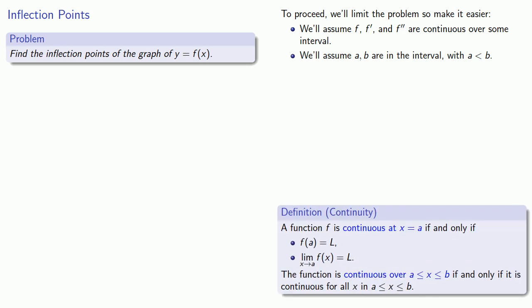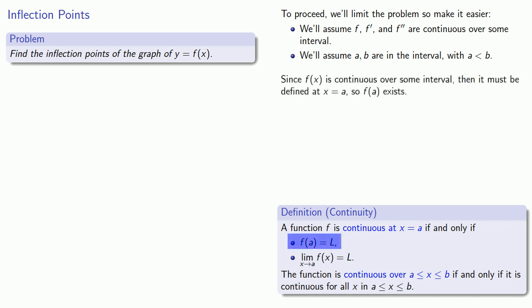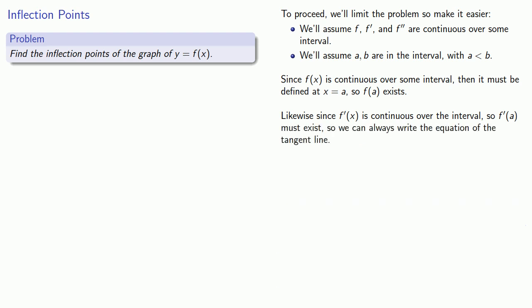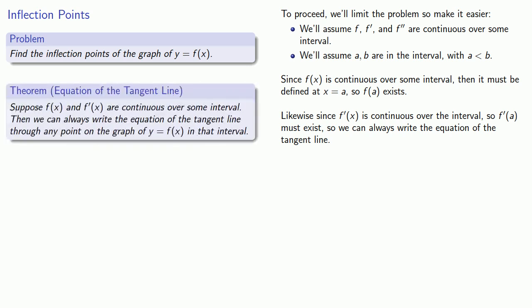Since f is continuous over some interval, then we know that f must exist. Likewise, since f prime is continuous over the interval, f double prime must also exist. The existence of f tells us that there is a point on the graph of y equals f where x equals a, and the existence of f prime means that we know the slope of the line tangent to the graph through that point. If we put these two things together, we know we can always write the equation of the tangent line.